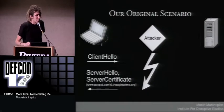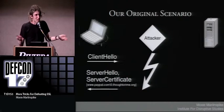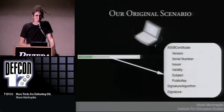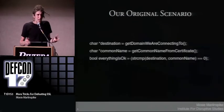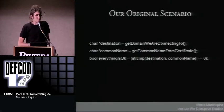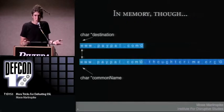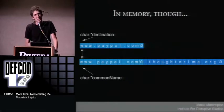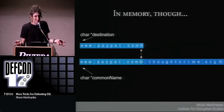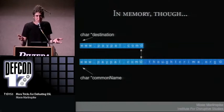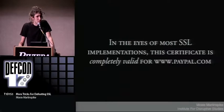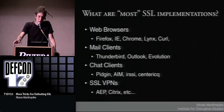Now doing our man-in-the-middle attack: we intercept the client hello, send back 'yes I am the server,' and our certificate is www.paypal.com[null].thoughtcrime.org. The first thing the client does is check the subject. The code might look like: char* destination = get_domain_we're_connecting_to(); char* common_name = get_common_name_from_certificate(); and strcmp(destination, common_name). strcmp walks through comparing character by character until it encounters a null character, indicating end of string — so it returns success. In the eyes of most SSL implementations, this certificate is completely valid for www.paypal.com.